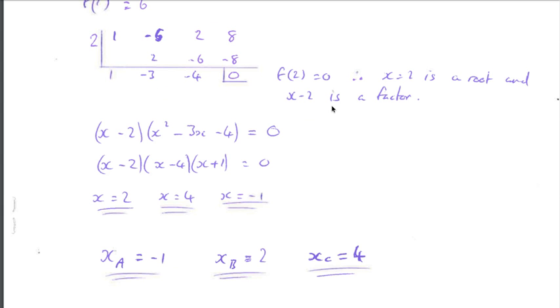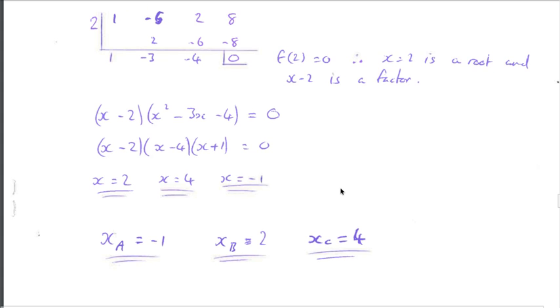So synthetic division, 2 is a root, so x minus 2 is a factor. We have x minus 2, and this 1 negative 3 negative 4 gives us x squared minus 3x minus 4. Remember, we're solving equal to 0, so we factorize this if possible. Then solve x minus 2 equals 0, so x equals 2. X minus 4 equals 0, so x equals 4, and x plus 1 equals 0, so x equals negative 1.